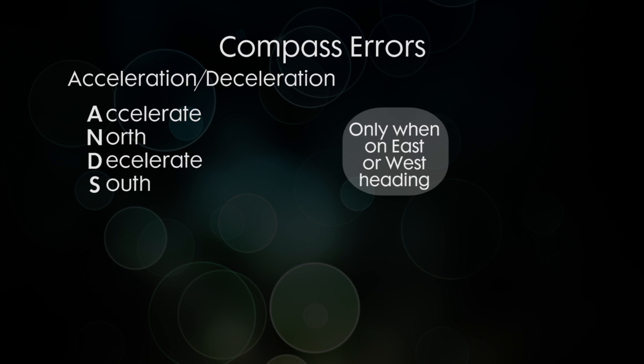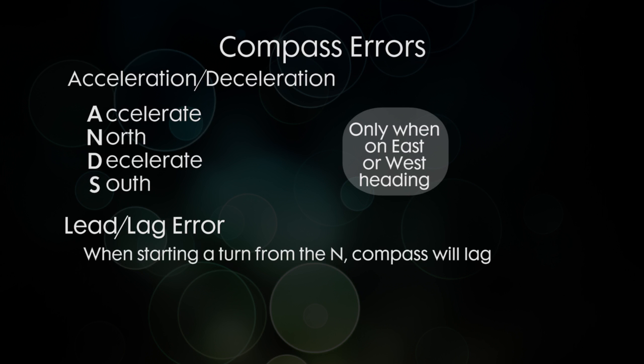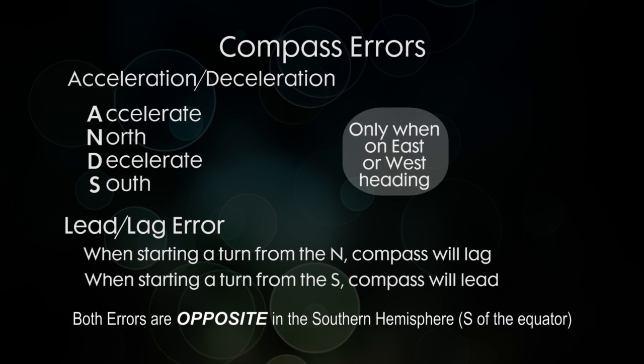And the second thing is the lead and lag error. If you're on a north heading and you decide to turn somewhere, the compass will lag behind. The compass will stay on north for a while, and then it'll eventually catch up. Same thing on the south side, except the compass will go faster, so it'll lead. It'll start on south and it'll go faster than you do. Eventually, it'll catch up to you by the time you get to west. So those two errors happen on a compass, no matter what airplane it's in, it's because of that extra weight.